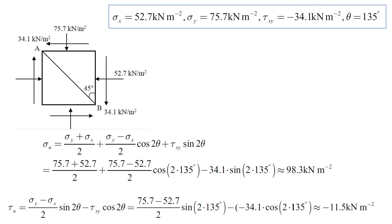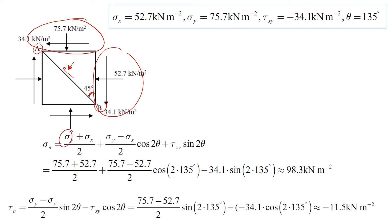Now let's look at the second example where we have a different set of stresses — stresses acting on the top part and on the right hand side of the soil element. We're also given plane A-B where the angle is 45 degrees, and we are asked to calculate the normal stress and shear stress acting on this plane.